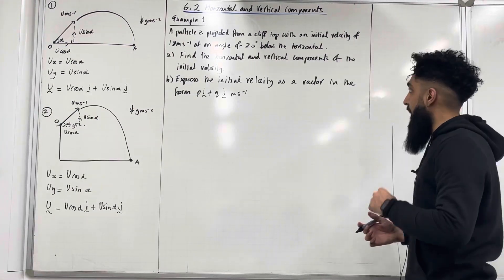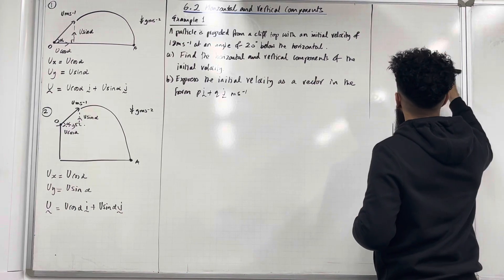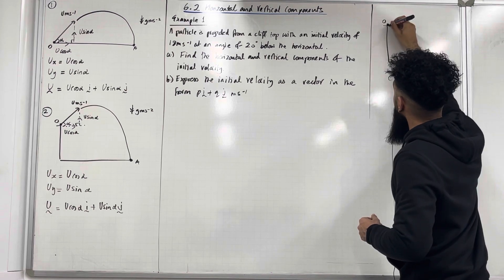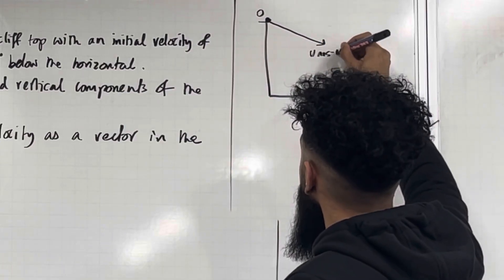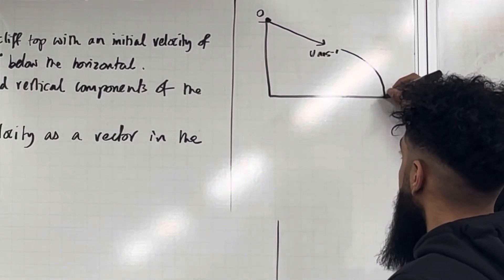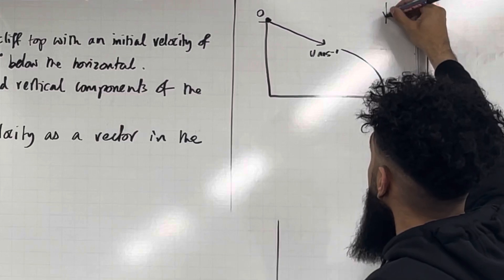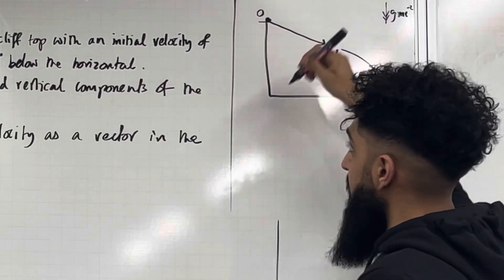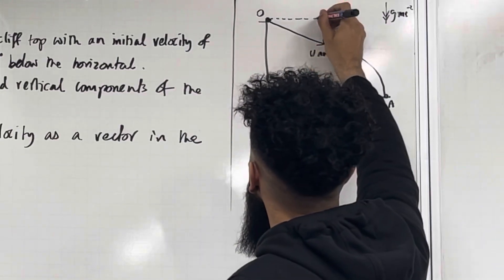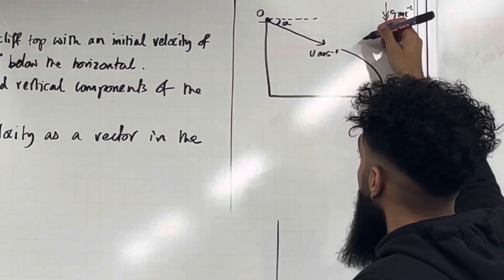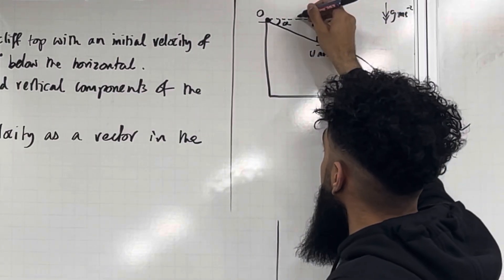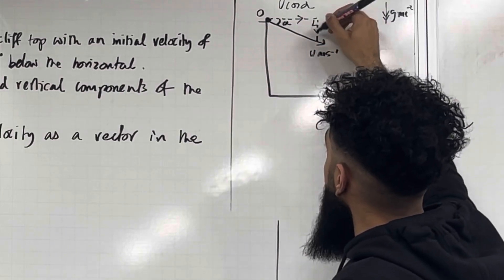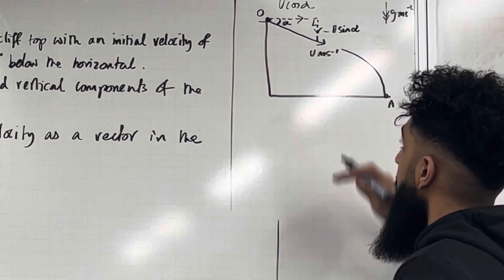Here is scenario 3. We have a horizontal ground and a point O above the horizontal ground — here is the particle. The initial velocity is u meters per second. Here is the pathway of the particle; it strikes the ground at the point A. We have acceleration due to gravity acting vertically downwards, g meters per second per second. Now this initial velocity forms an angle alpha below the horizontal. We can form a right-angled triangle and put in the arrows. This component will be u cos alpha, and this component will be minus u sin alpha, because it's going downwards.